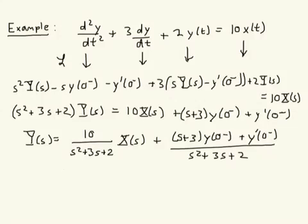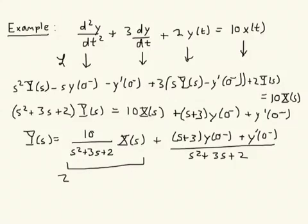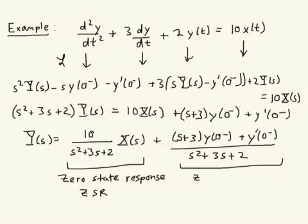Now we have this equation in a form where we could just take the inverse transform of these two terms individually and get y(t). It's helpful to think about what these two terms mean. Notice that this first term here only depends on the input X(s), not on any of the initial conditions. The initial condition terms are over here. We can have names for each part of this solution — this part here we will call the zero-state response, usually abbreviated ZSR.